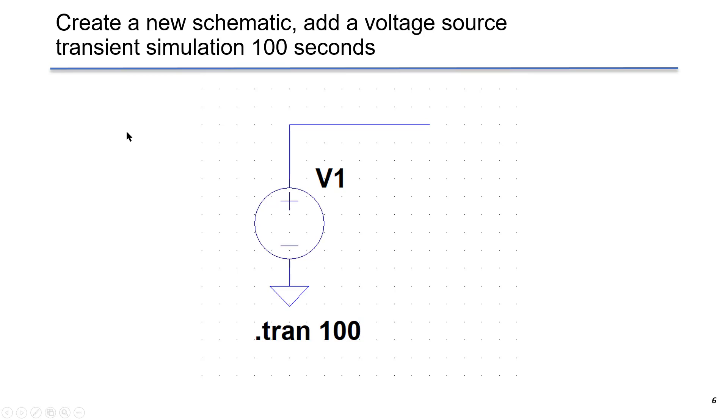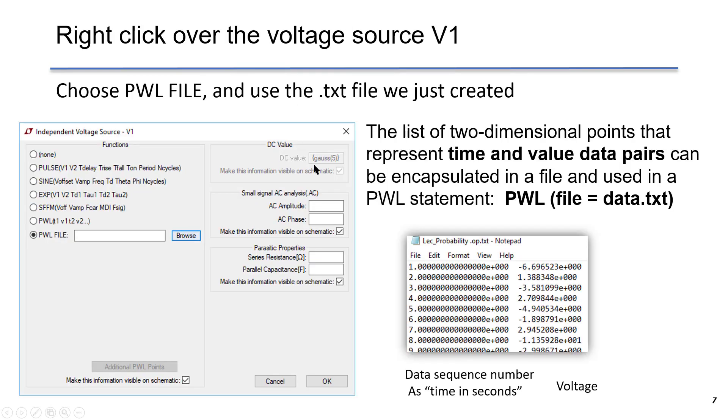Here, we create a new schematic. We add the voltage source V1. We add the transient simulation for 100 seconds. We right click over the voltage V1 and choose PWL file. We browse and use the file we just created.